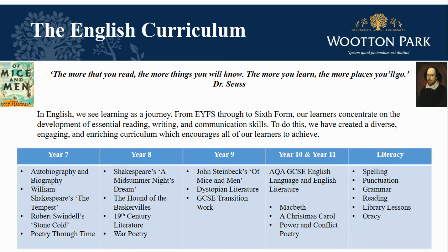Year nine acts as our GCSE transition year whereby we introduce the core skills assessed in the GCSEs for language and literature, but try to apply them to other texts across global perspectives. So we start off, for example, looking at John Steinbeck's Of Mice and Men, and then start to move on to dystopian literature, using that as a stepping stone not only for creative writing but also argumentative and persuasive writing.